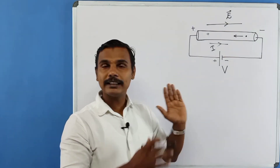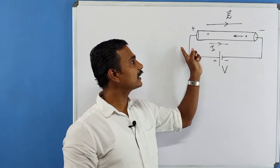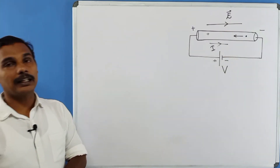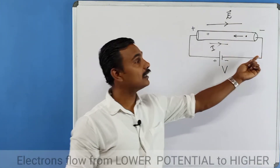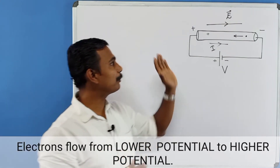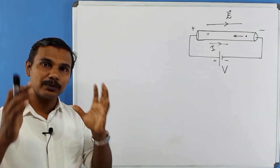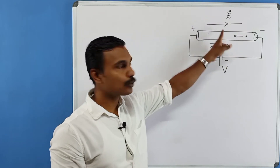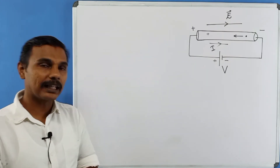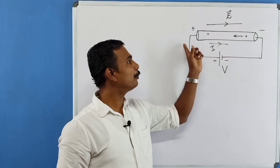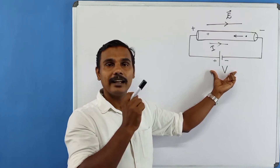This is the conventional current, and this is the full current. The direction is from the positive terminal of the cell to the negative terminal of the cell. Electrons flow from lower potential to higher potential. Positive charges flow from higher to lower potential. To apply electric field across a conductor, we connect a cell — this provides the potential difference.